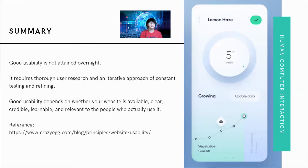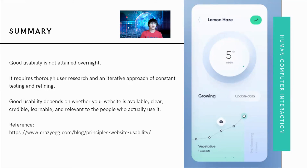In summary, good usability is not achieved overnight — it takes days, months, and years to perfect. It requires thorough user research and an iterative approach of constant testing and refining. Good usability depends on whether your website or application — not just websites but any applications, including Android and iOS — is available, clear, learnable, and relevant to the people who actually use it.